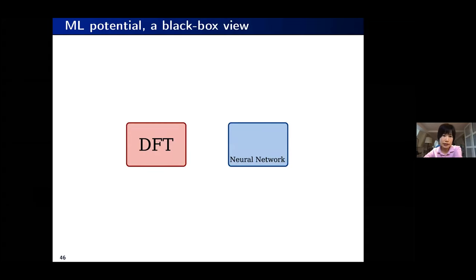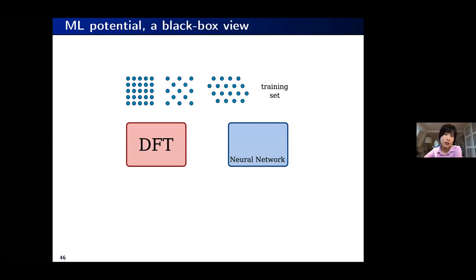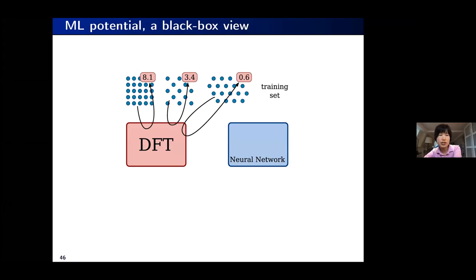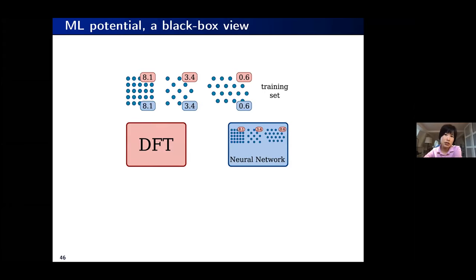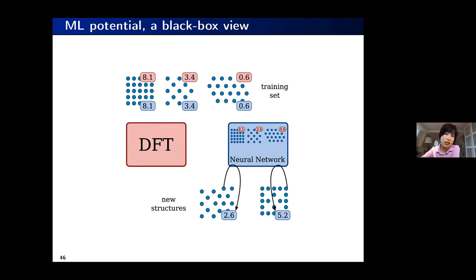So how does it work? First I'd like to use a black box view. We have certain configurations of atoms in our training set, we label them — meaning we compute the energy and forces using DFT, although it can be other electronic structure methods — and then we feed this information to the neural network, although it could also be a Gaussian process or something else. When new configurations are seen, the machine learning model can give speedy predictions of the energy and forces associated with these structures.